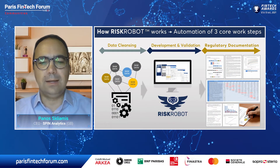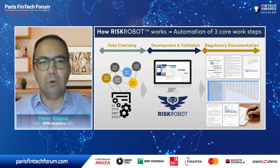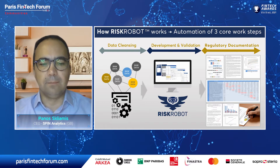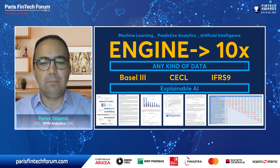Risk Robot can lift up the learning curve of understanding the behavior of banking customers, as it reduces the time spent on manual, tedious tasks including data cleansing, model development, and model documentation. Risk Robot automates and explains all of them. It dramatically reduces the time from months to minutes and introduces a new paradigm in credit risk modeling, boosting credit expert productivity by 10x.